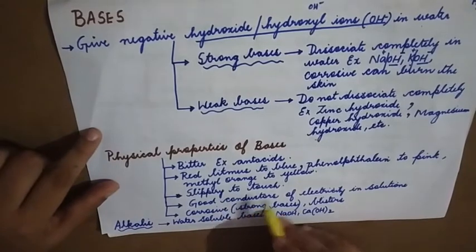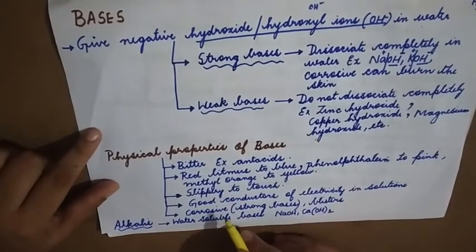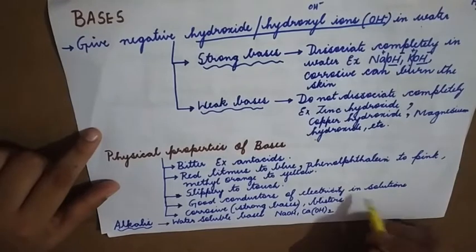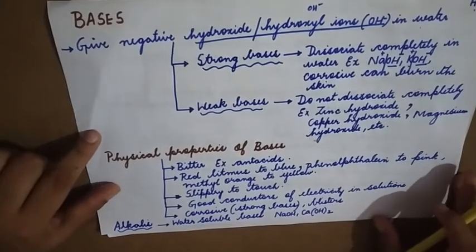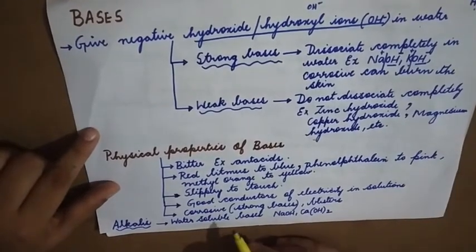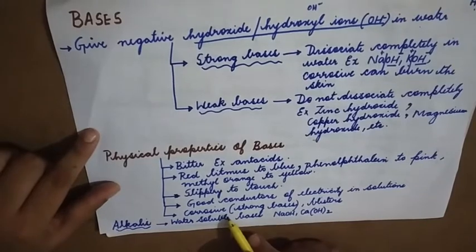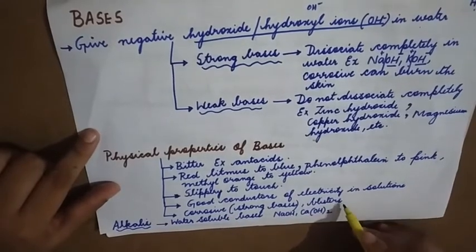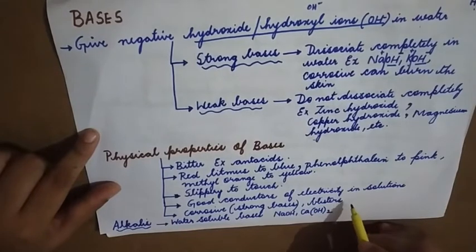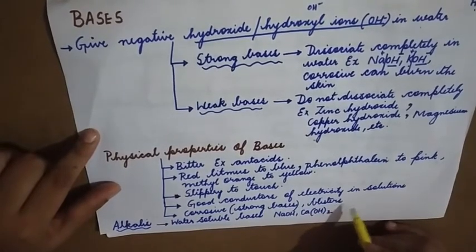Bases are slippery to touch and are good conductors of electricity in solution. They are corrosive in nature — that means they can cause damage. Only strong bases are corrosive and can also cause blisters, which are wounds filled with pus.